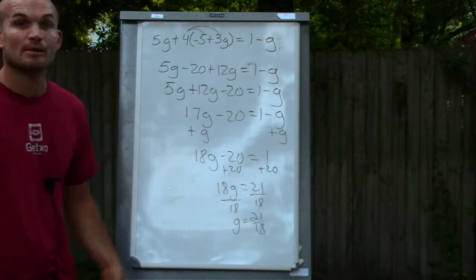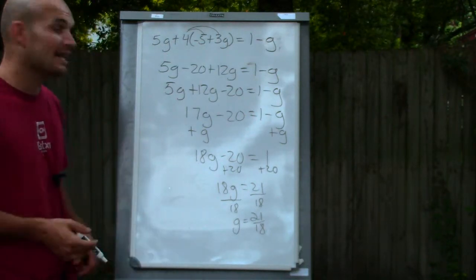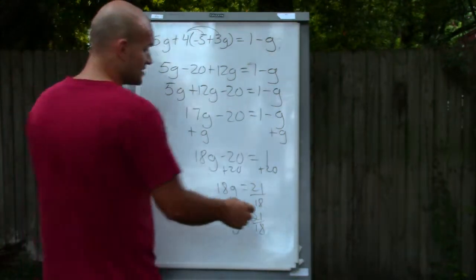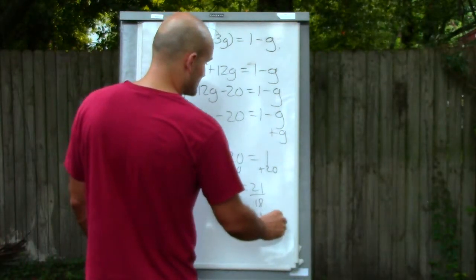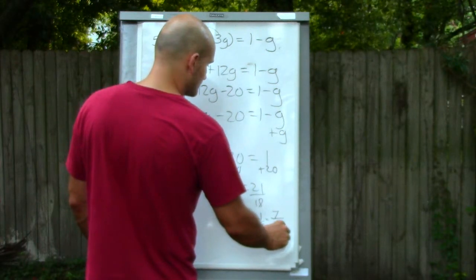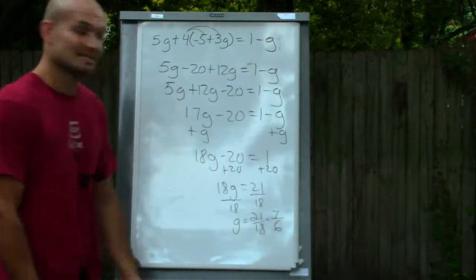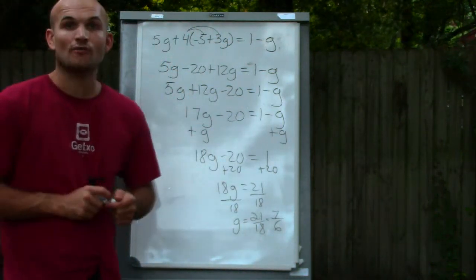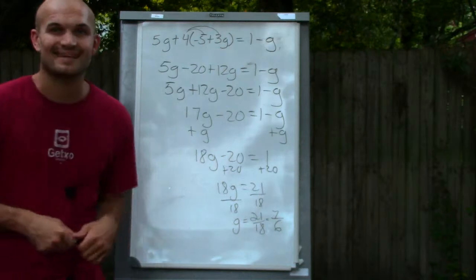So I look and I say, alright, what is the largest number that goes into 21 and also goes into 18? And the answer is going to be 3. So that's going to leave us with 7 over 6 is going to be our reduced answer. So hopefully that helps you out. Thanks for watching.